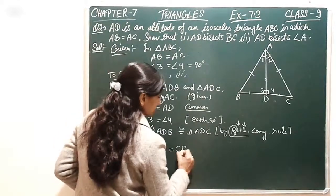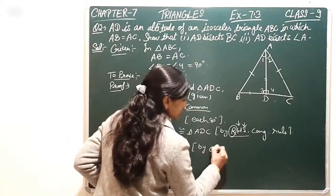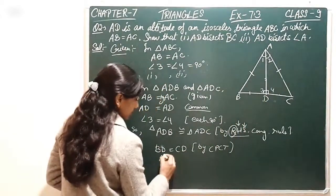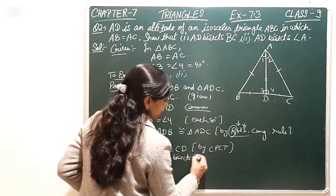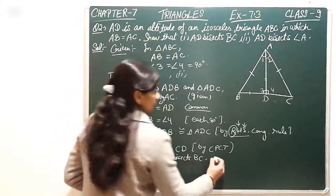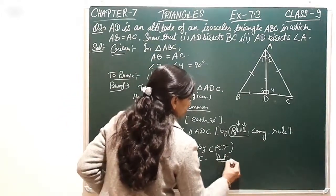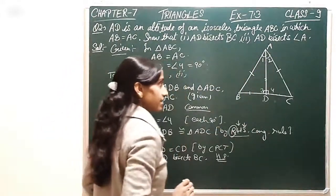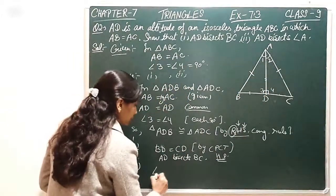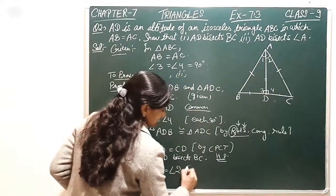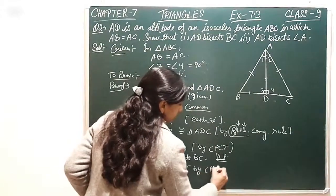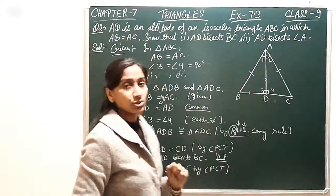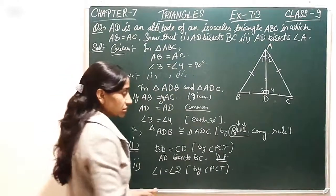Here we need to see what is the first part - AD bisects BC we need to prove. So we can say that BD is equal to CD by CPCT. That means our AD line, it bisects BC. This is proof of the first part.